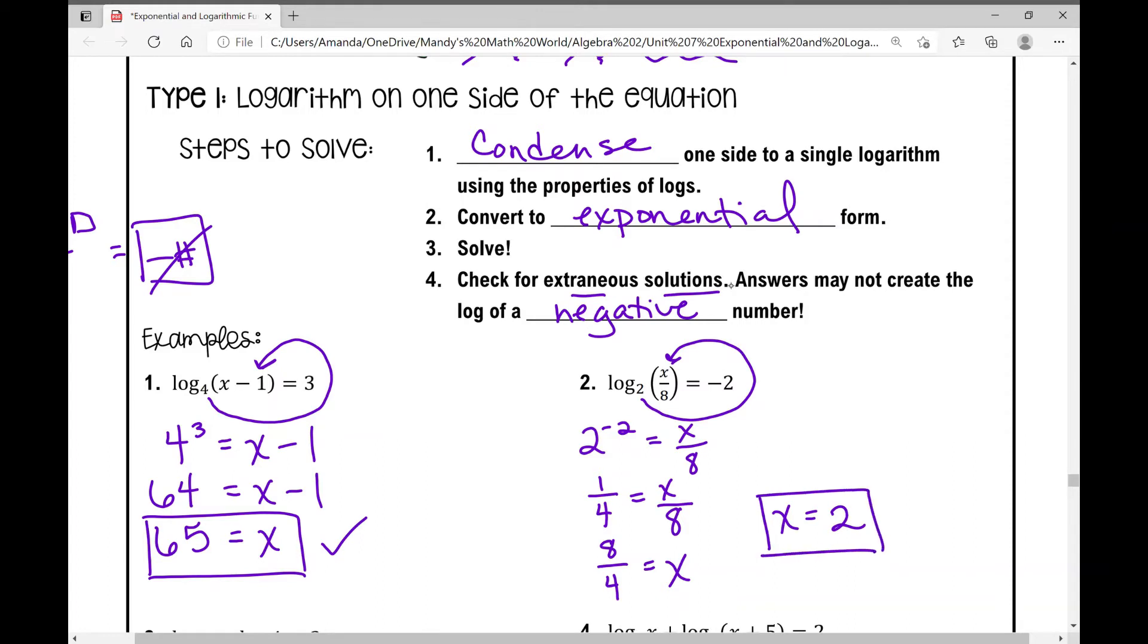And if I plug in two for x, two over eight is just one fourth. That's a positive value. So that works.